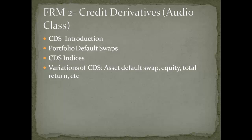Alternatively, the protection buyer may enter into a digital swap where the payout is binary — the payment from a credit event is fixed and known in advance, independent of the actual impairment. Therefore it is possible that the protection buyer will not be made whole. On the other hand, if the post-default amount is significantly higher, the payout on the digital swap may exceed the economic loss on the bond. The digital swap is a special type of cash settlement where the payment amount is pre-decided.